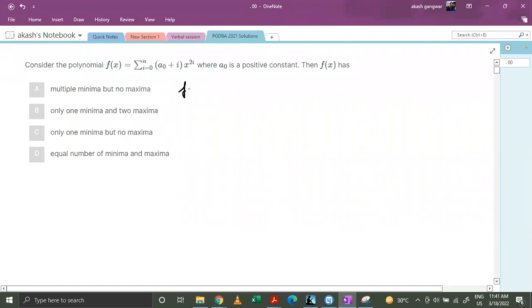So I will write down the expression: f(x) equals a₀ plus 0·x raised to power 0 plus a₀ plus 1·x raised to power 2 plus a₀ plus n·x raised to power 2n.